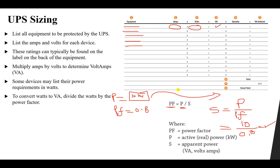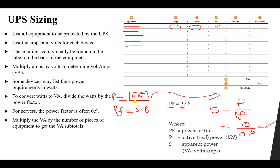To convert watts to volt-ampere, divide the watts by the power factor. For servers, the power factor is often 0.9. After getting the volt-ampere for each piece of equipment, multiply it by the quantity — for example, if you have three units of a 20 kVA device, multiply 20 kVA by 3 to get the total volt-ampere for that equipment type. Then add all the volt-ampere totals together.